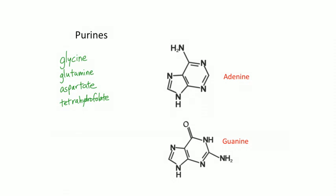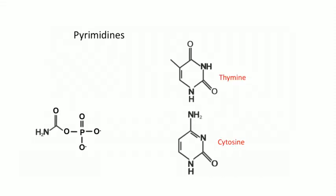Tetrahydrofolate is the metabolically active form of folic acid — one reason you need folic acid to synthesize DNA. The carbons in purines come from tetrahydrofolate, glycine, and CO2/bicarbonate. So CO2, glycine, and tetrahydrofolate are the carbon sources, and glutamine and aspartate contribute nitrogen — making five substances needed to make a purine.